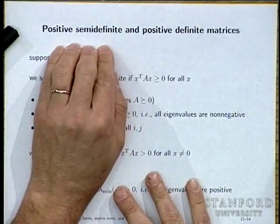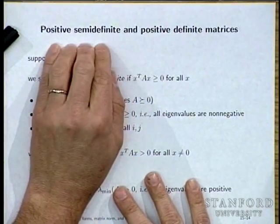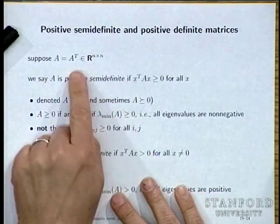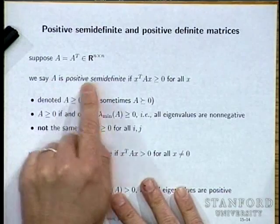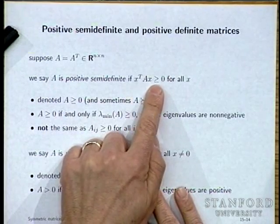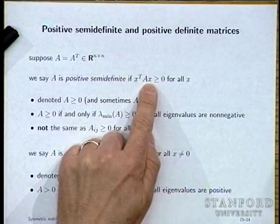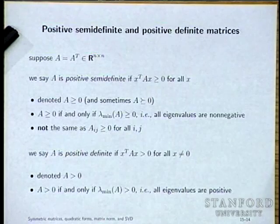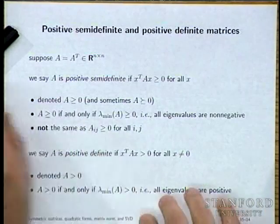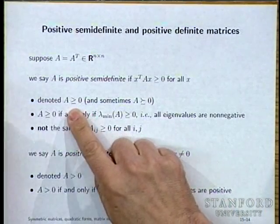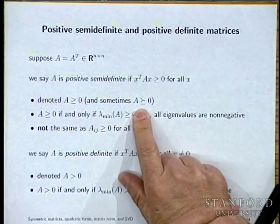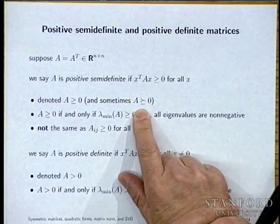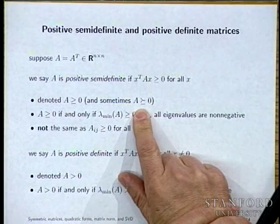Now we're going to look at positive semi-definite and positive definite matrices. A symmetric matrix is called positive semi-definite if X transpose AX is always non-negative — that is, the quadratic form is always non-negative — and it's denoted A ≥ 0.